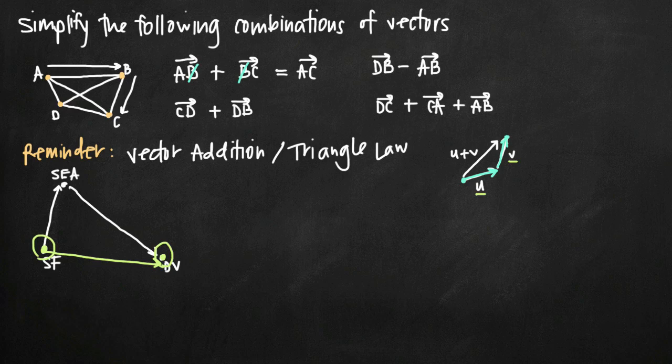Now what about this? The vector CD, so if I have the vector here CD, I go from C to D, and then I add to that the vector from D to B, so from D to B, like this, what's my end result?